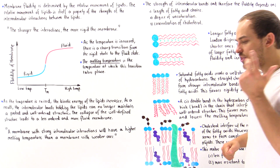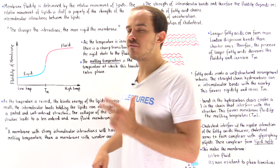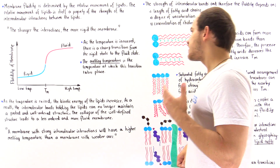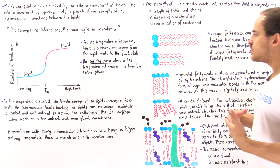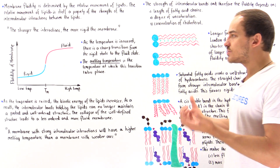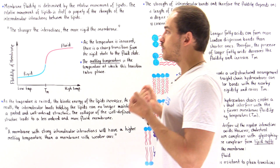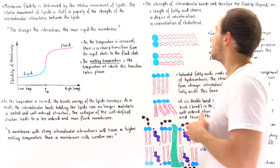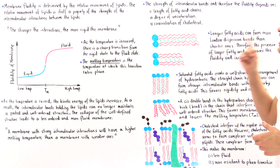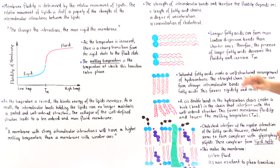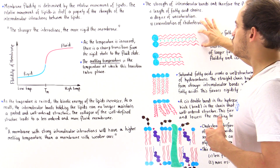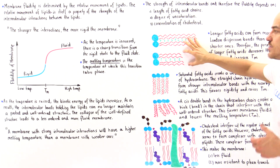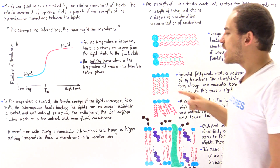Number three is the concentration of cholesterol. Let's discuss how each one affects the strength of the intermolecular interactions within the membrane, beginning with the length of fatty acids. We'll compare two sets of adjacent fatty acids — one set that is clearly longer than the other.